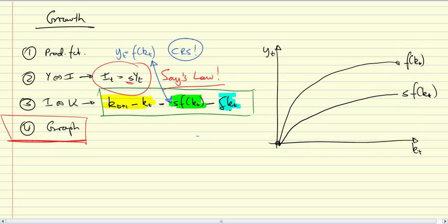Now, what is delta kt? Delta kt is the depreciation of capital per worker. Delta is a constant parameter, and kt is the variable, so this is a linear function with a zero intercept.